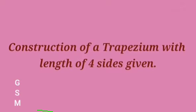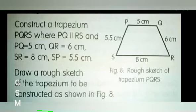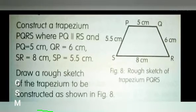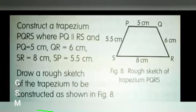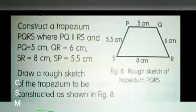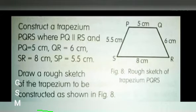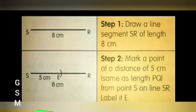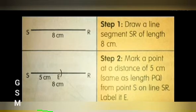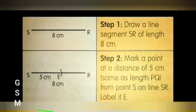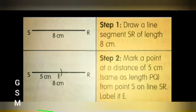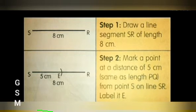Next, let us see the construction of a trapezium with the length of 4 sides given. Construct a trapezium PQRS where PQ is parallel to RS, and PQ equals 5 cm, QR equals 6 cm, SR equals 8 cm, and SP equals 5.5 cm. Draw a rough sketch of the trapezium. Step 1: Draw a line segment SR of length 8 cm. Step 2: Mark a point at a distance of 5 cm, same as length PQ, from point S on line SR; label it E.